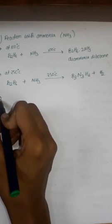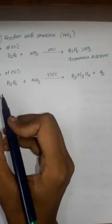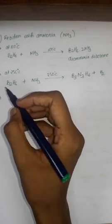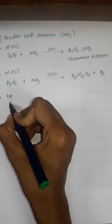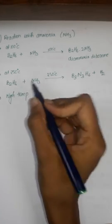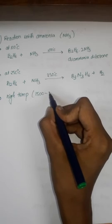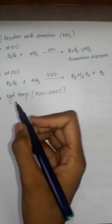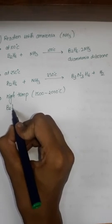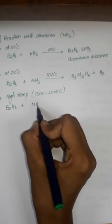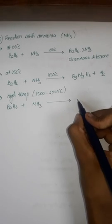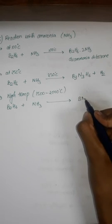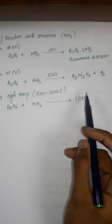When Diborane reacts with ammonia at high temperature, around 1500 to 2000 degrees Celsius, it will give boron nitride. Balance this reaction.